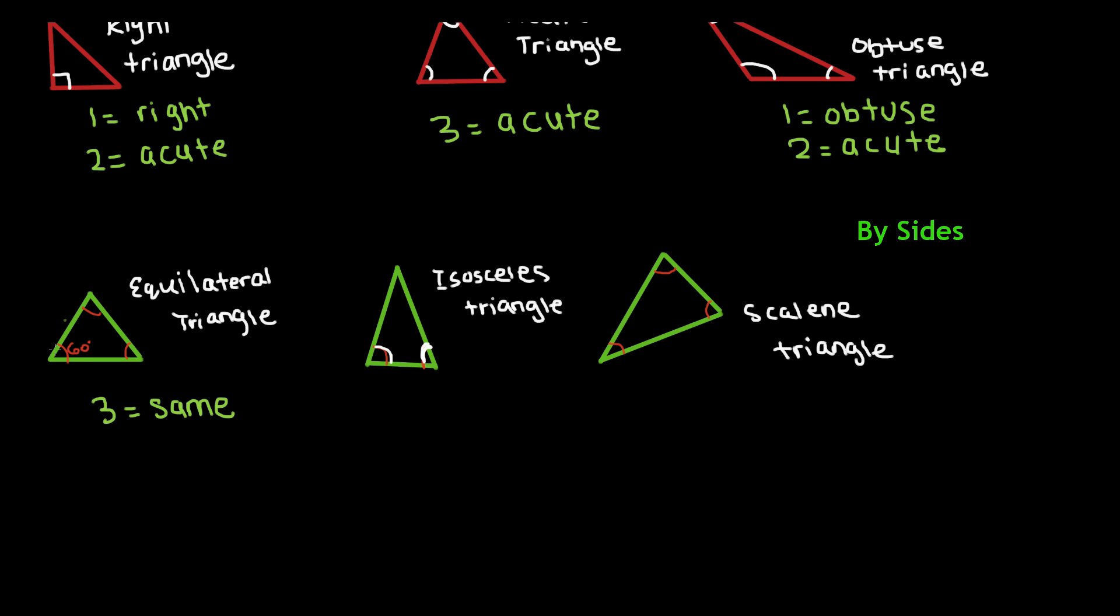So this one over here is going to be 60 degrees, this is going to be 60 degrees, and this is going to be 60 degrees. So it makes sense because a triangle can only be 180 degrees, and if you multiply 60 three times, you get 180.